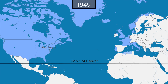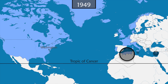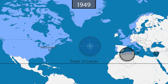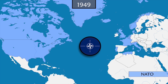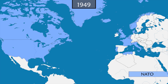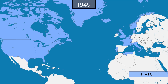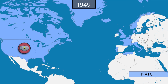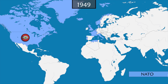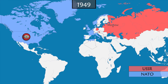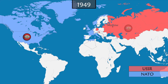The territories of the signatory countries north of the Tropic of Cancer are affected, including the departments of French Algeria and Cyprus and Malta, which are British colonies. The North Atlantic Treaty Organization, or NATO, is thus created. Western Europe is now officially under the protection of the United States, which is the only nuclear power. But just a few months later, on August 29, 1949, the Soviet Union tests its first atomic bomb.